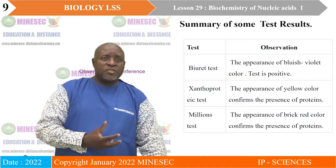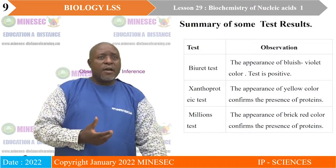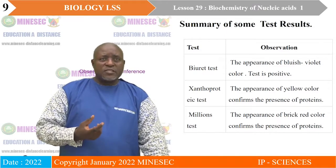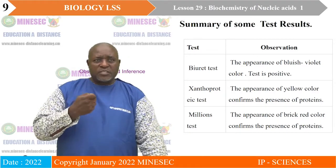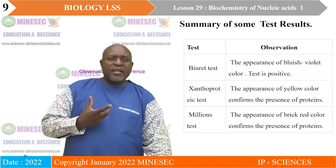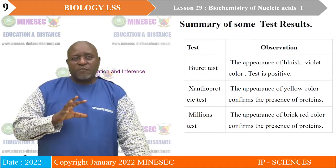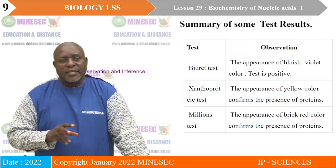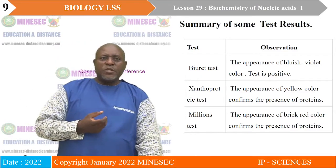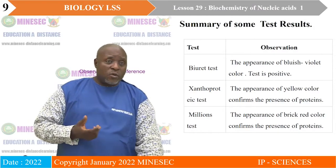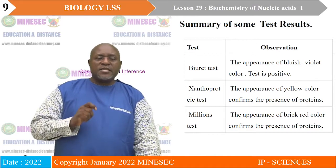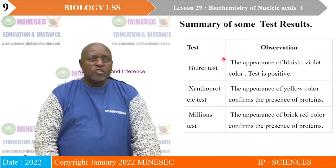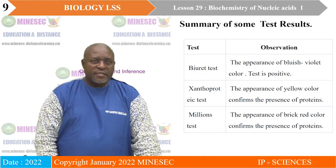These are some of the tests that can be used for protein. The biuret test produces a bluish-violet coloration, and when it does that, the test is positive. There is the xanthoproteic test, where the appearance of a yellow colour confirms the presence of proteins. And there is the Millon's test — it is a very expensive reagent and laboratories are not always able to get it — where the appearance of a brick-red colour confirms the presence of proteins. But the most used test is the biuret test.